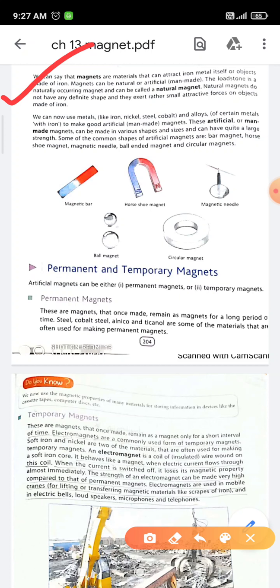Magnets can be natural or artificial, meaning man-made. Natural magnet is called lodestone. Lodestone is a naturally occurring magnet. Natural magnets do not have any definite shape and they exert rather small attractive force on objects made up of iron, compared to artificial magnets.